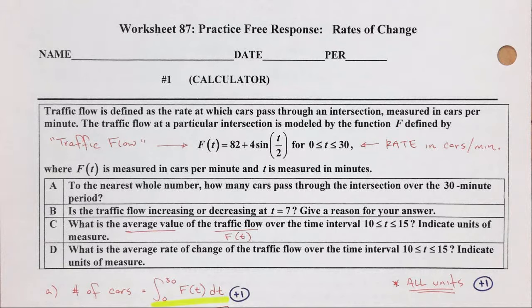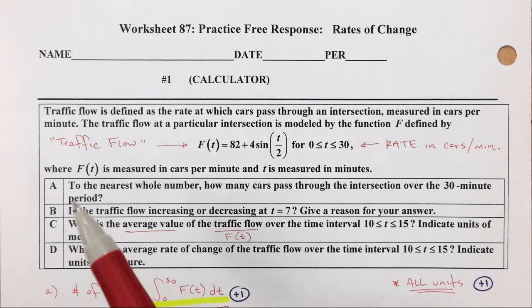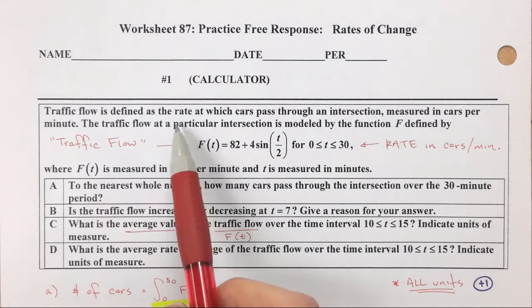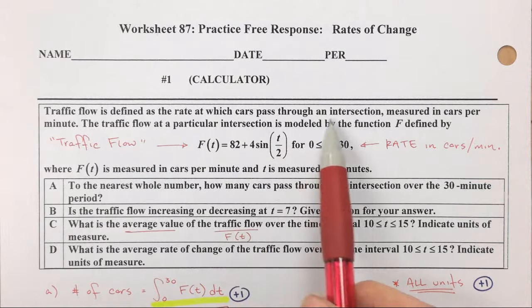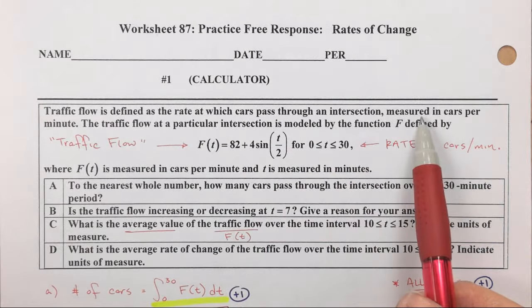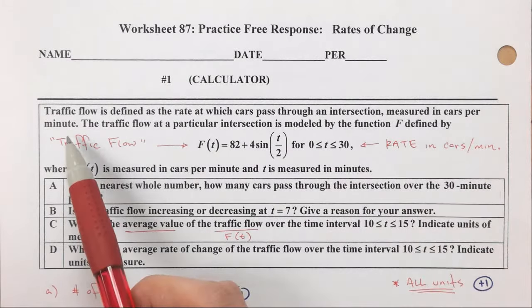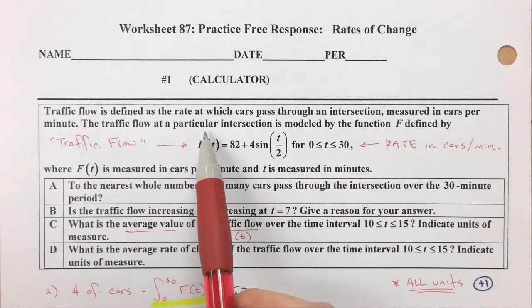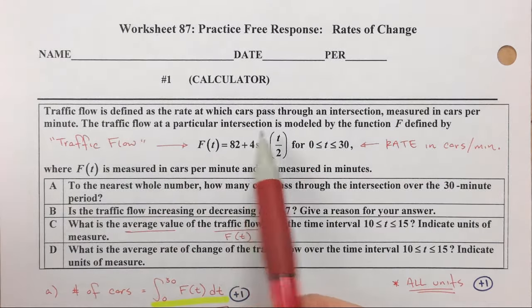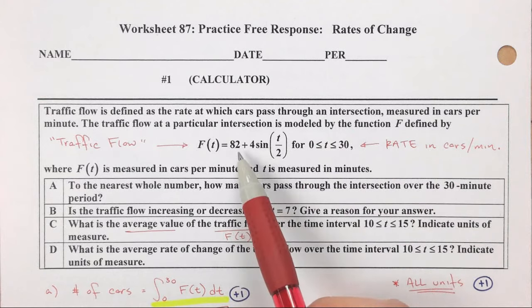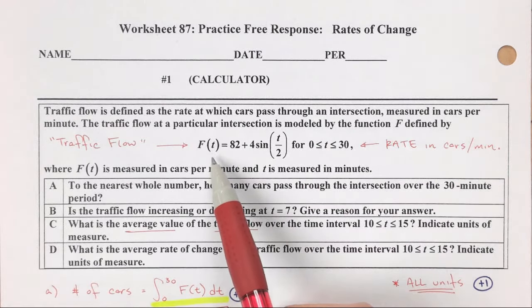All right, rates of change. So I'm going to read the problem first. The traffic flow is defined as the rate at which cars pass through an intersection, and it's measured in cars per minute. The traffic flow at a particular intersection is modeled by this function f. So at a certain intersection,